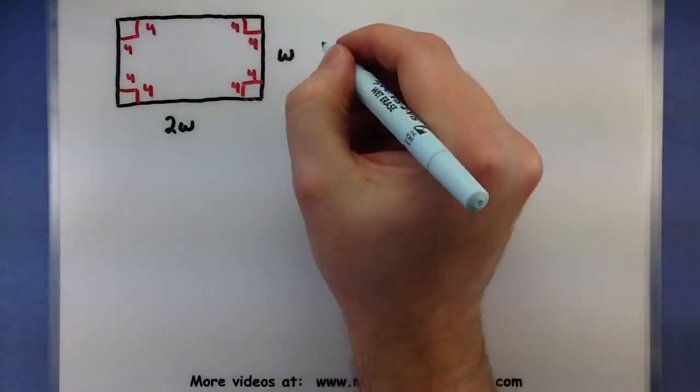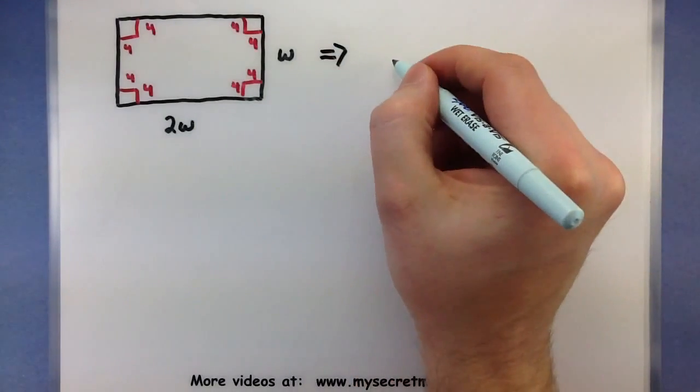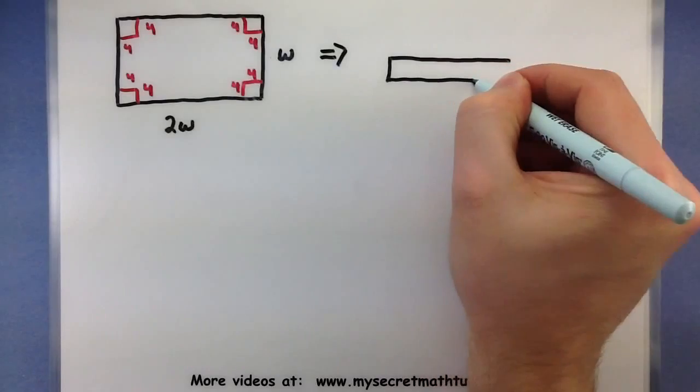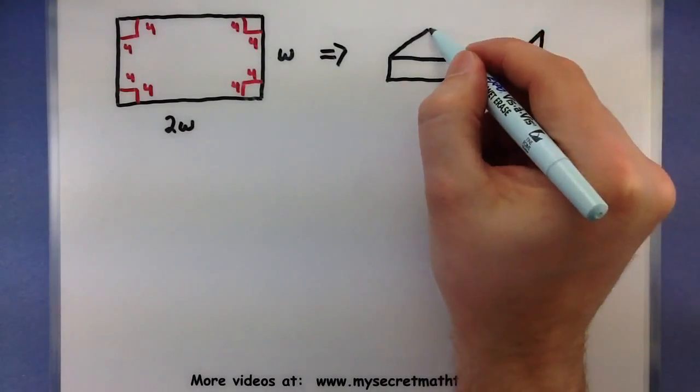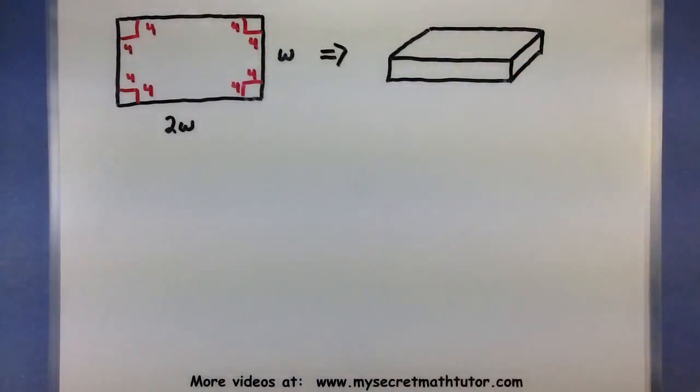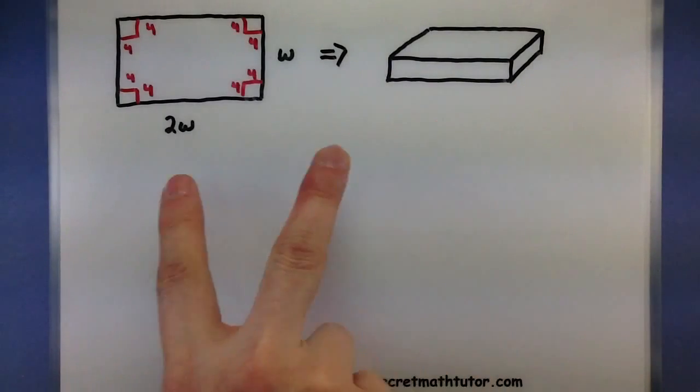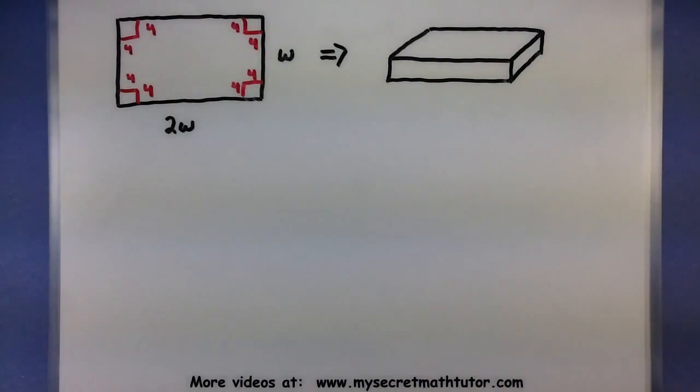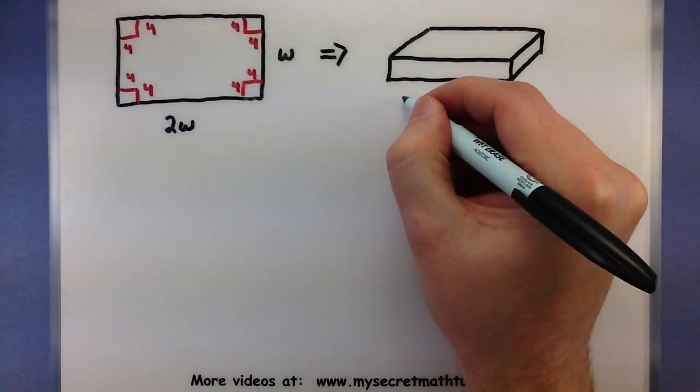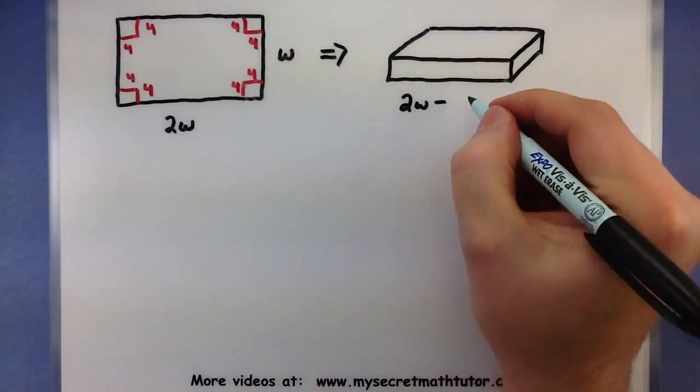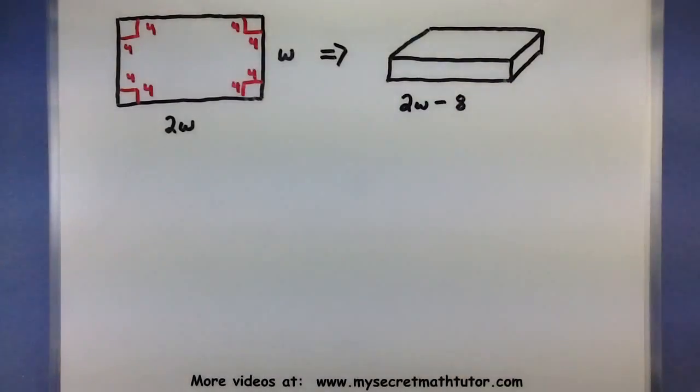Now by cutting out those little 4 centimeter squares we'll be able to fold this thing up into a box. A box will look something like this. So this part is open and now we want to label the dimensions of this box. Now be very careful in recognizing that the dimensions of this box are not the same as the cardboard. Here's why. This cardboard was originally 2W long. But we've gone along and taken out these 4 centimeter squares. In fact I've taken 2 of those 4 centimeter squares out. So the length of this one is 2W minus 2 of those 4 centimeter squares or 8. 2W minus 8.